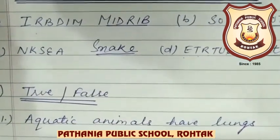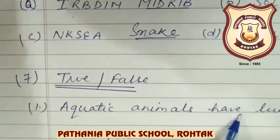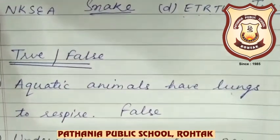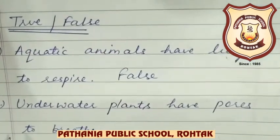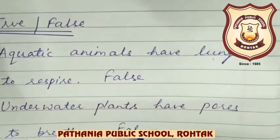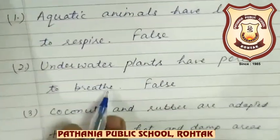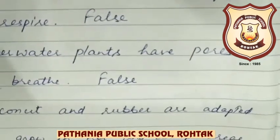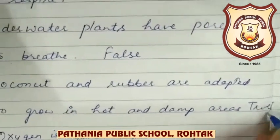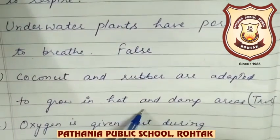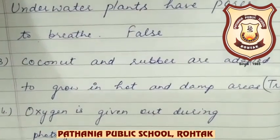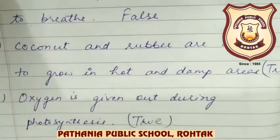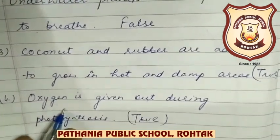Now True or False, question number seven. First: Aquatic animals have lungs to respire — that is False. Aquatic animals have gills, not lungs. Second: Underwater plants have pores to breathe — False. Underwater plants do not have stomata. Third: Coconut and rubber are adapted to grow in hot and damp areas — that is True. Oxygen is given out during photosynthesis — that is True. In photosynthesis they absorb carbon dioxide and release oxygen.